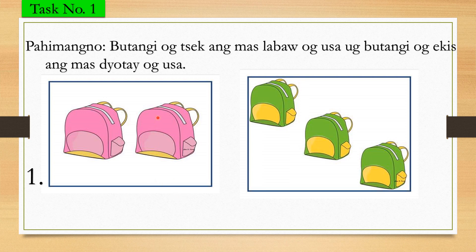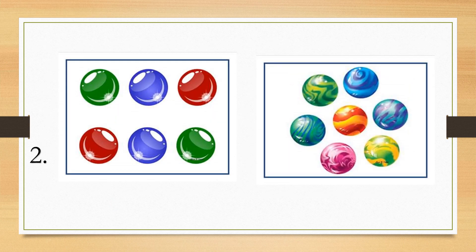Okay, now let us try to answer. Pahimang no — butangi og check ang mas labaw o gusa, ug butangi og X ang mas jutay o gusa. Look at the picture — adunay bag. Doha ka set sa bag sa number 1, so pangita ang mas labaw o gusa, butangi og check. Ang mas jutay o gusa, butangi og X. Now let's move on to number 2 — kindly look at which one is mas labaw o gusa, put a check; mas jutay o gusa, put an X.